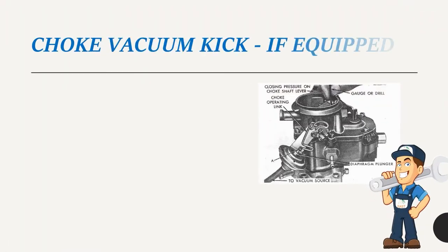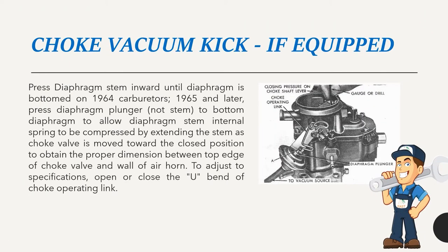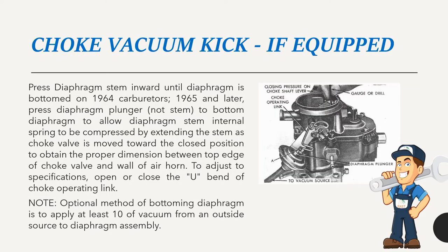Choke vacuum kick (if equipped): Press diaphragm stem inward until diaphragm is bottomed. On 1965 and later models, press diaphragm plunger — not stem — to bottom diaphragm, allowing the diaphragm stem internal spring to be compressed by extending the stem as choke valve is moved toward closed position to obtain the proper dimension between top edge of choke valve and wall of air horn. To adjust, open or close the U-bend of choke operating link. Optional: apply at least 10 inches of vacuum from an outside source to bottom the diaphragm.